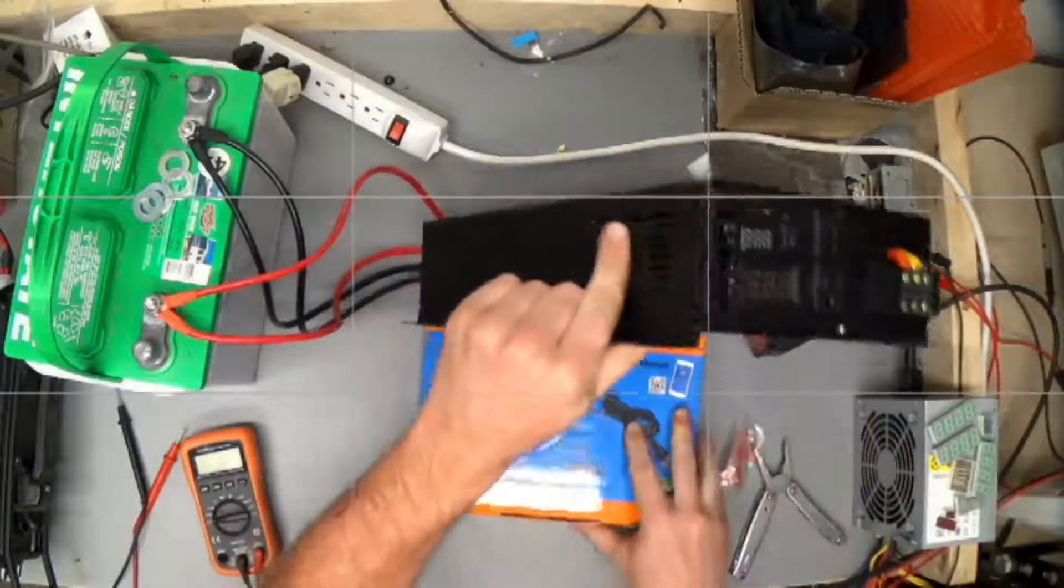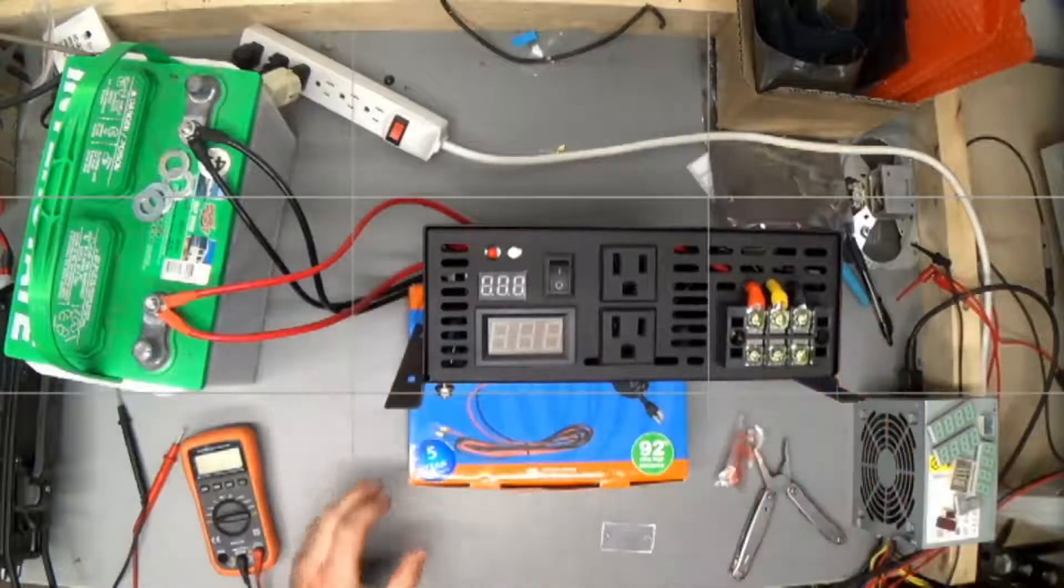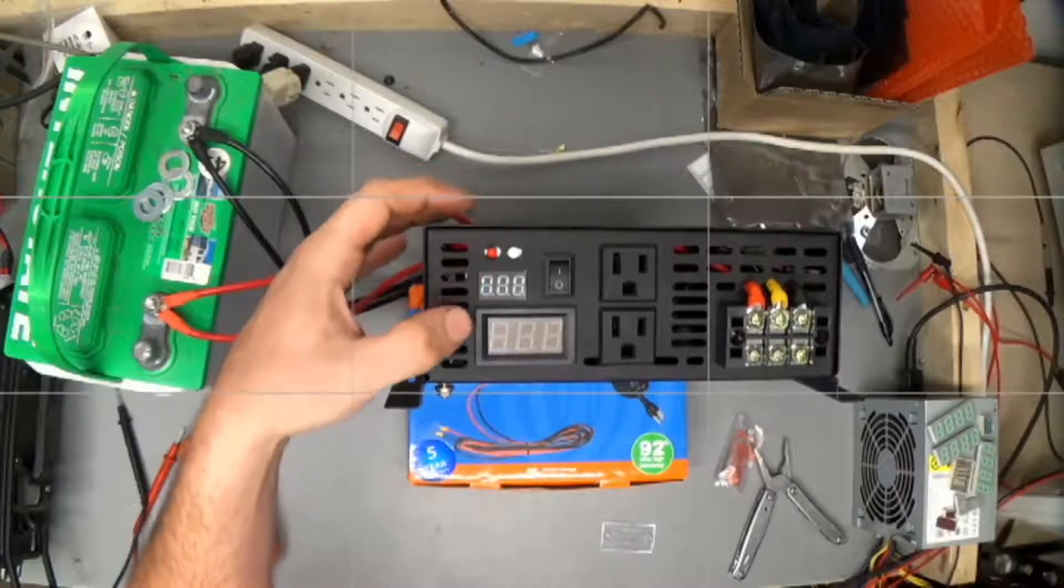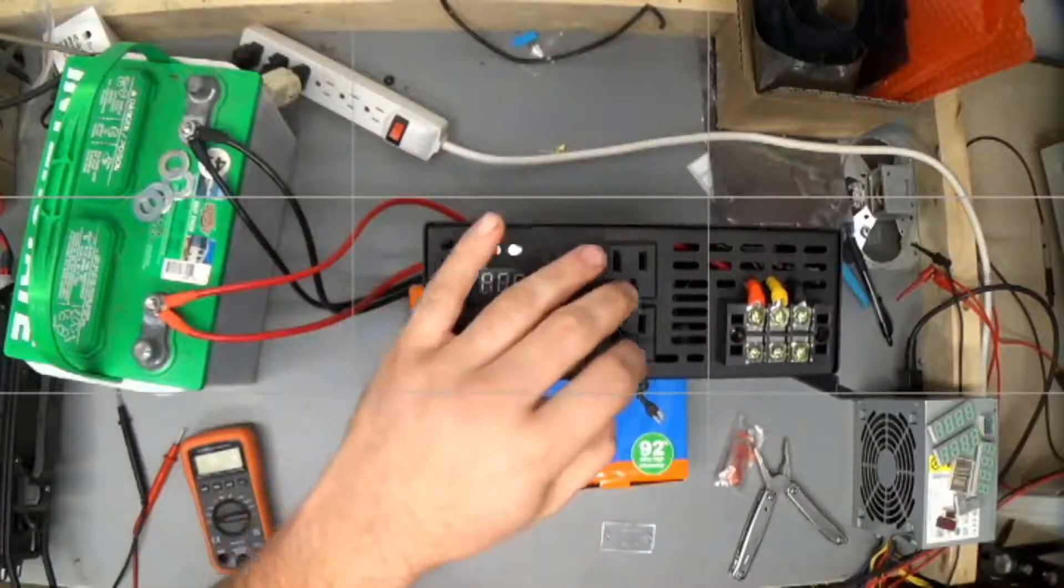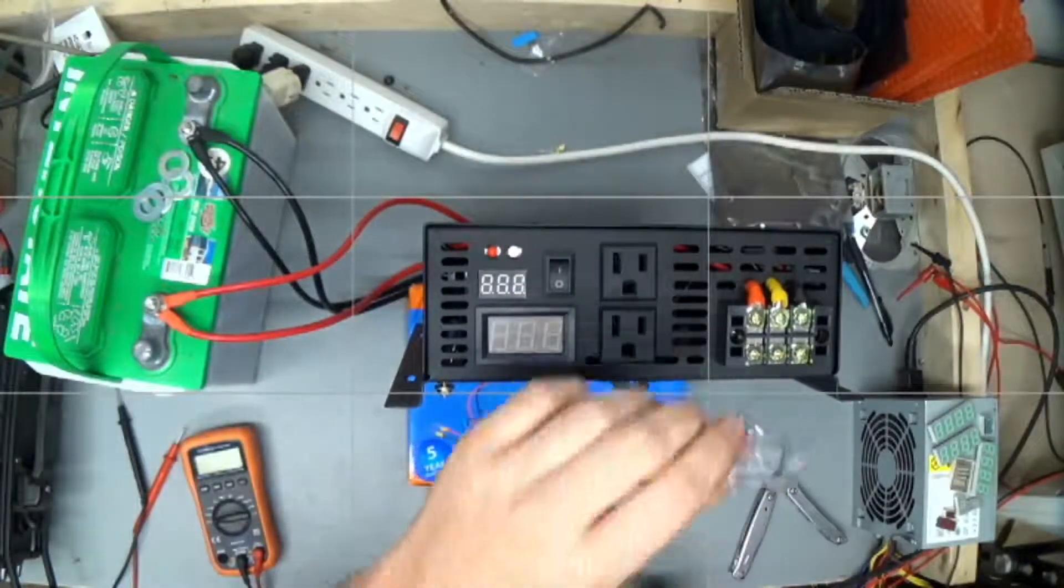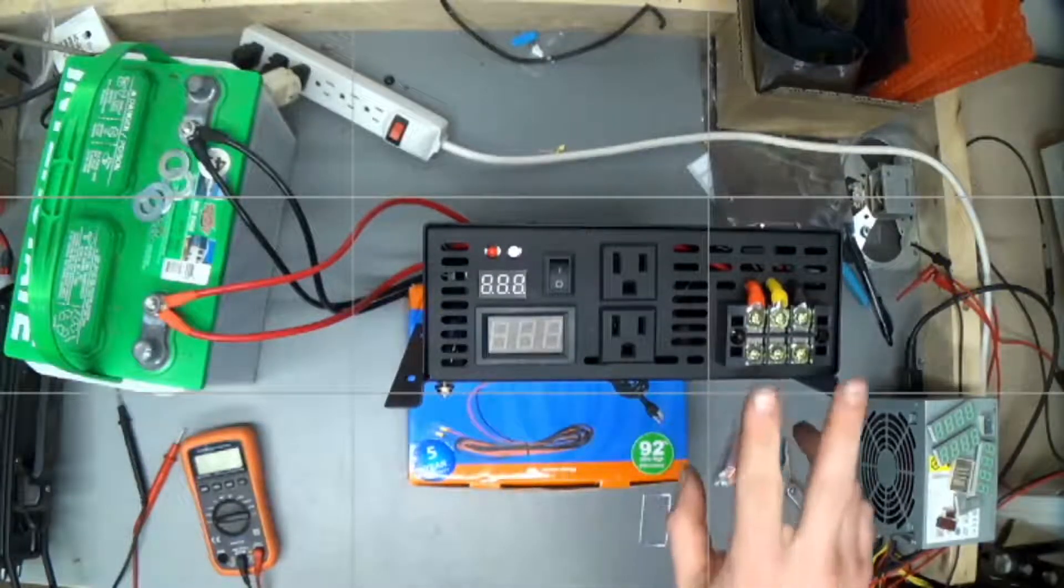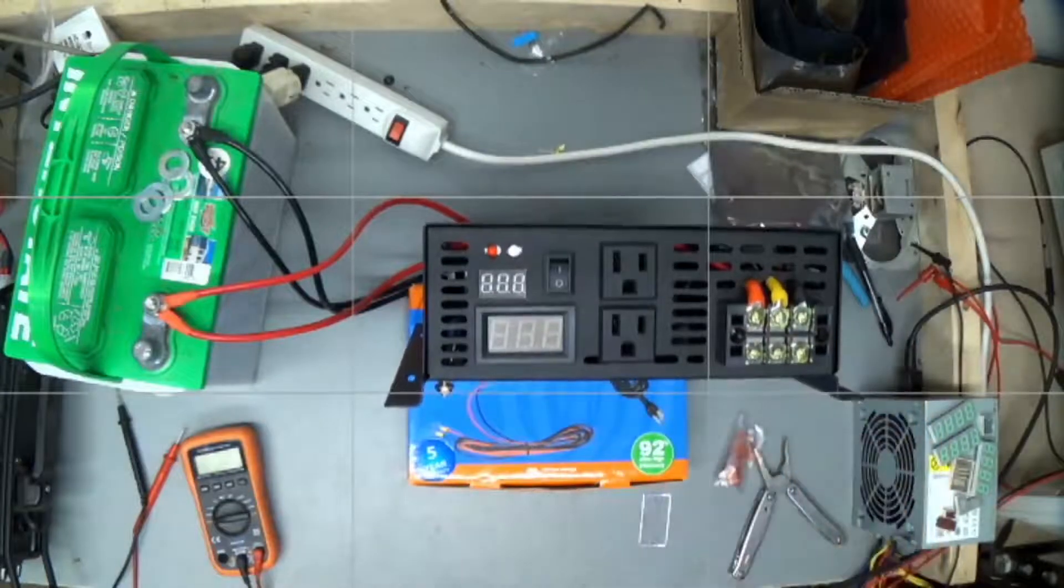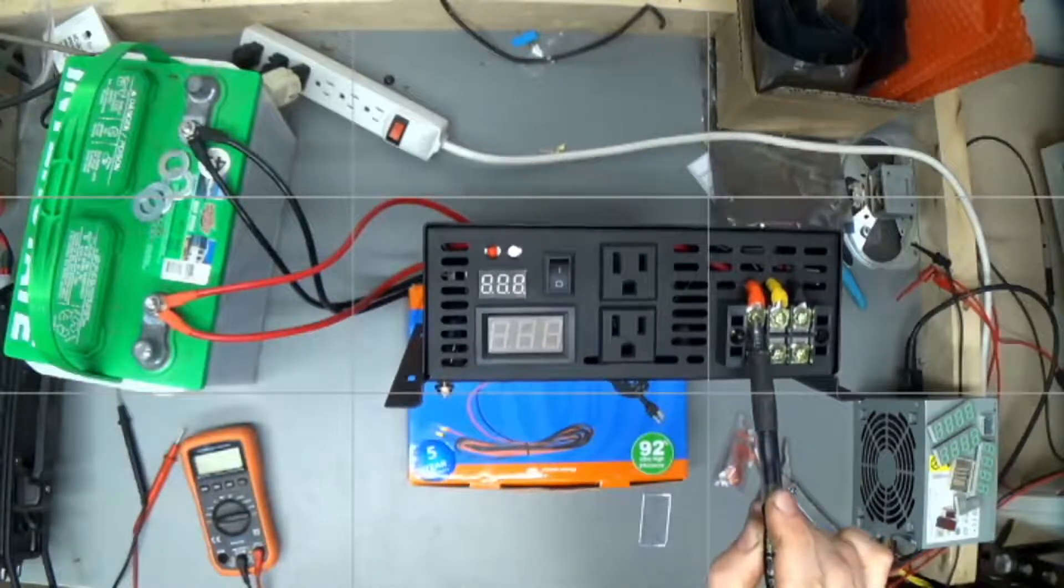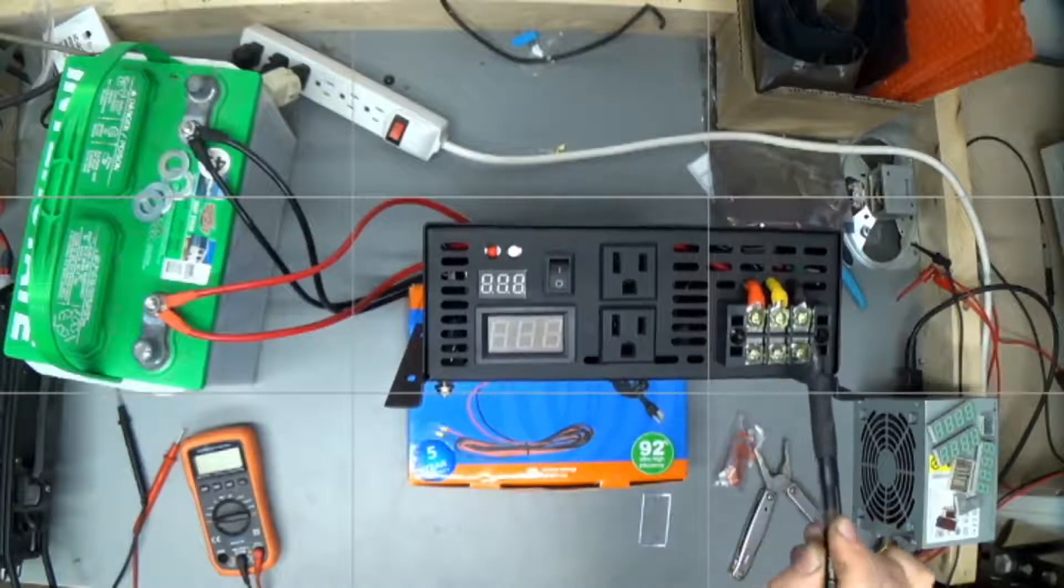But for our purposes, just testing it, I think that will be sufficient. Let's set it up here where you can see it, shall we? Okay, so here we have an input voltage display. That's an output voltage display. We've got a couple of receptacles and this terminal block for hooking it to your RV or to your house or whatever.